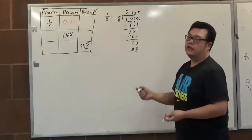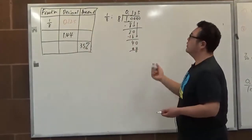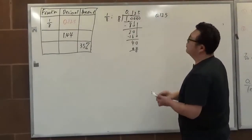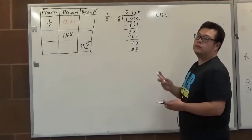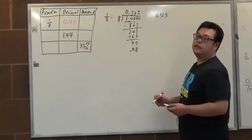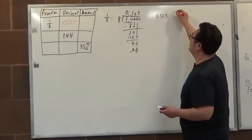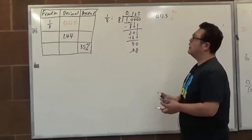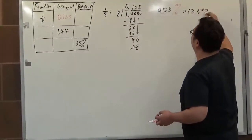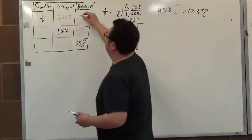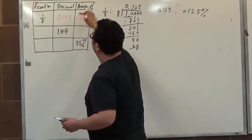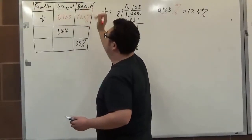With the decimal we get, converting to percentage will be very easy. We just move our decimal point 2 units to the right side and attach a percentage symbol on the end. That gives us 12.5%.